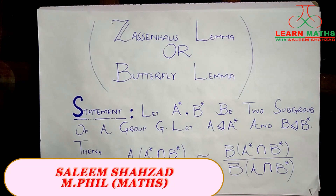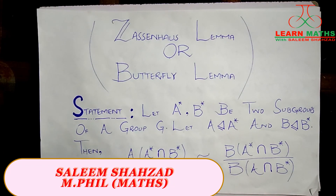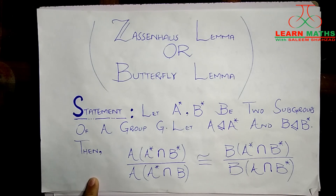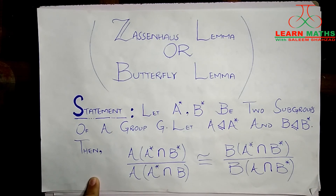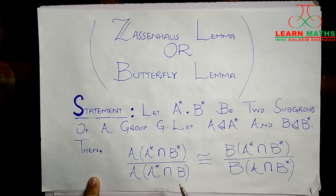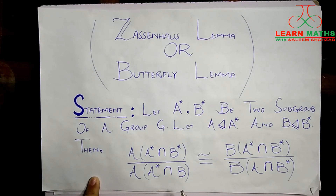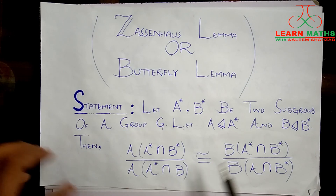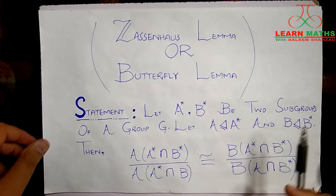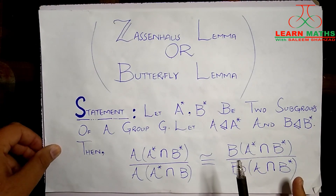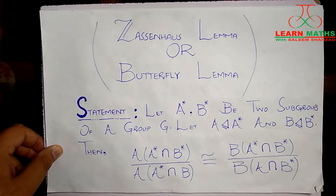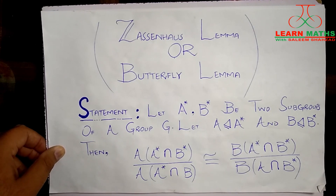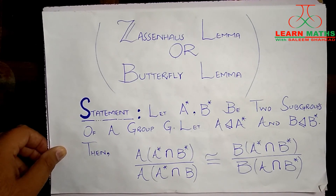Let's discuss the statement of the Zassenhaus lemma, or butterfly lemma. You might be wondering why we are calling it the butterfly lemma — well, if you make the lattice diagram of all the subgroups being discussed in this theorem, it will look like a butterfly. That is why it is sometimes known as the butterfly lemma.